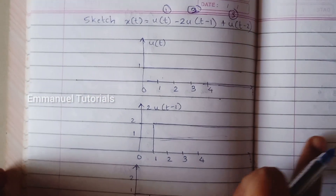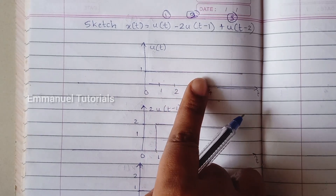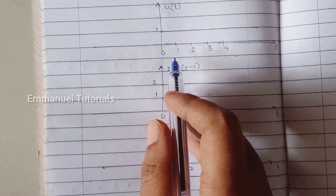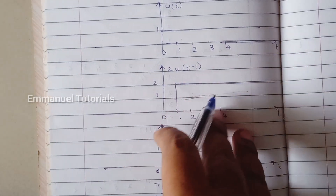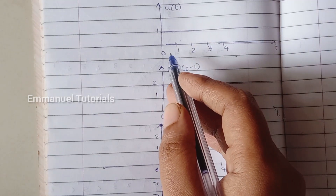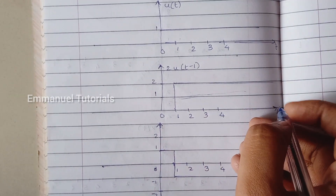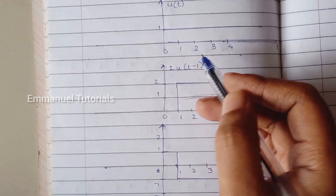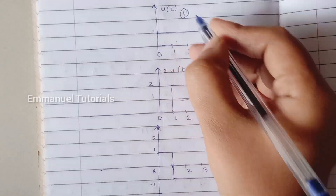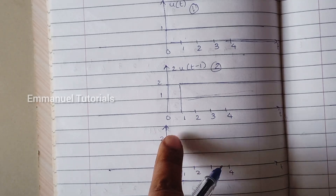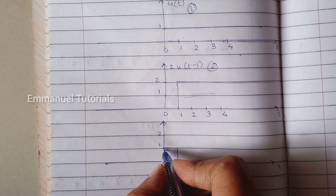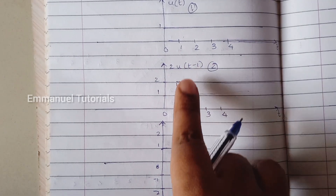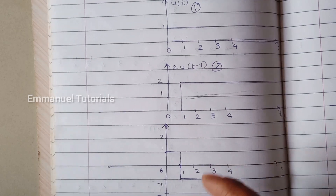Now the first operation we'll be performing is subtraction: u(t) minus 2·u(t-1). The first signal starts from 0 and ends to infinity; the second signal starts from 1 to infinity. So the extreme left of our result should be from 0. At t=0, the first signal's amplitude is 1 and the second signal's amplitude is 0, so 1 minus 0 is 1 — that is what I've drawn here. At t=1, the first signal's amplitude is 1 and the second signal's amplitude is 2, so 1 minus 2 is minus 1 — that is what I've drawn here.